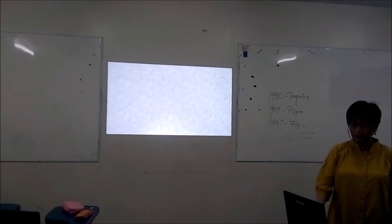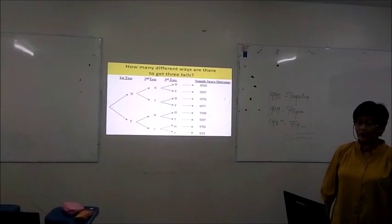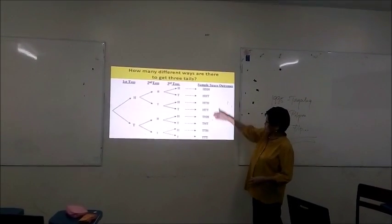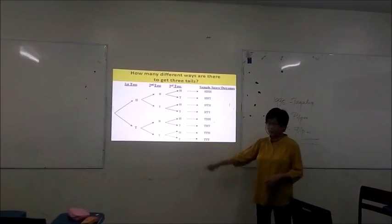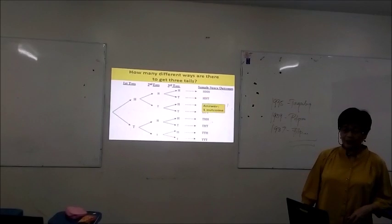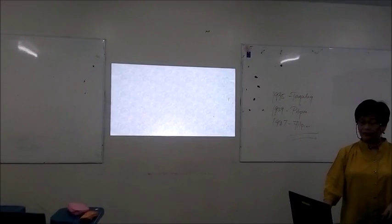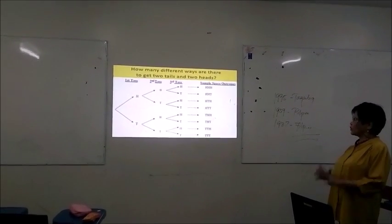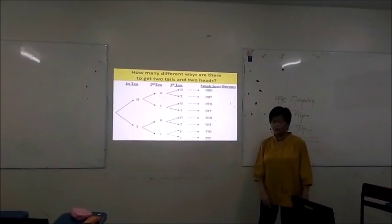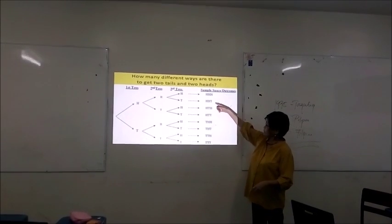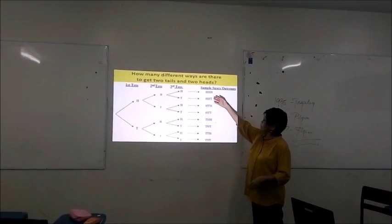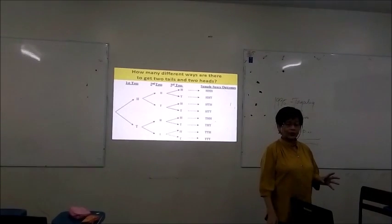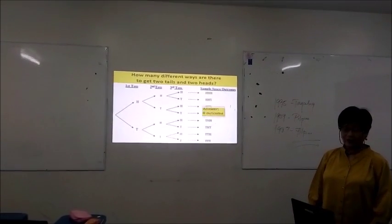The next question is: how many different ways are there to get three tails? This is like saying exactly three tails, and it is very obvious that you have only one outcome with exactly three tails — TTT. So the answer is one outcome. Now for the last question: how many different ways are there to get two tails and two heads? Since we only toss the coin three times, we cannot have both two tails and two heads — that would require four tosses. So the answer is zero outcomes.